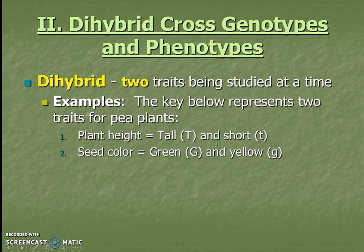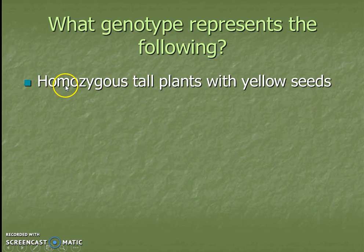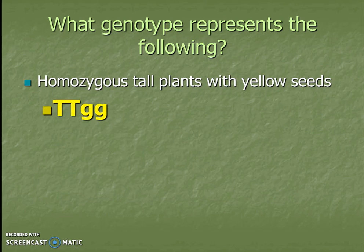Through word problems we'll write the genotype for each scenario. For homozygous tall plants with yellow seeds: homozygous tall means big T, big T. Yellow seeds are recessive — the only way to be yellow is to have two little g's — so the genotype is TT gg. We take it step by step; these traits are independent so I can tackle each half of the word problem separately. For short plants with pure yellow seeds: short plants are little t, little t; pure yellow seeds are little g, little g.